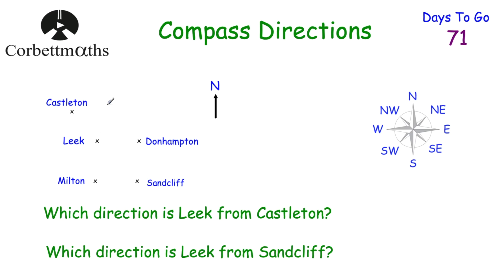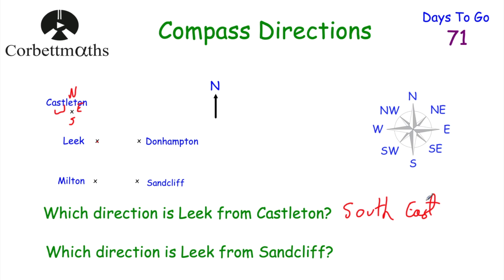Let's look at the next question. We've got the same towns on the same diagram, and we're asked two more questions: which direction is Leake from Castleton, and which direction is Leake from Sandcliffe? Feel free to press pause and write down both answers. For the first one — which direction is Leake from Castleton? — if we're at Castleton using 'never eat shredded wheat,' we're going in between south and east. That would be southeast.